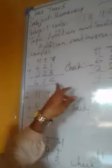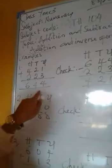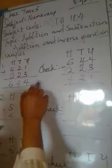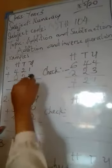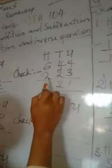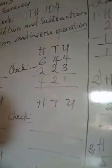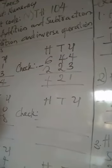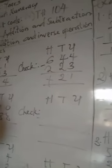Now, what do I mean by inverse operation? I will simply check if my answer is correct by using 644, which is my answer, to subtract any of these. Now I have 644 minus 223. Remember that I have always told you that the opposite of addition is subtraction.